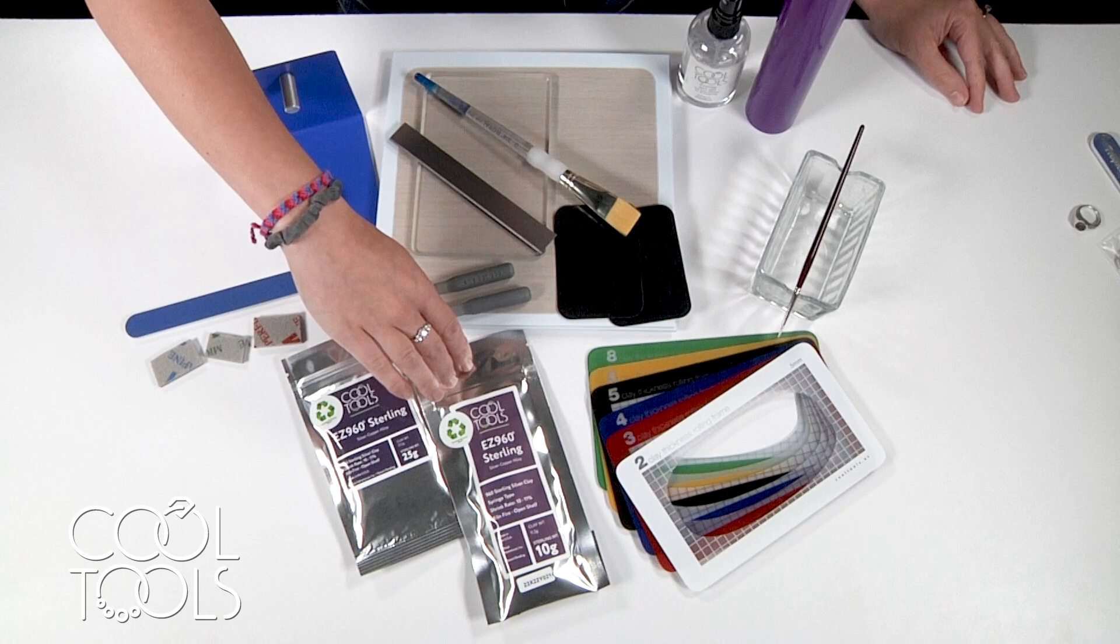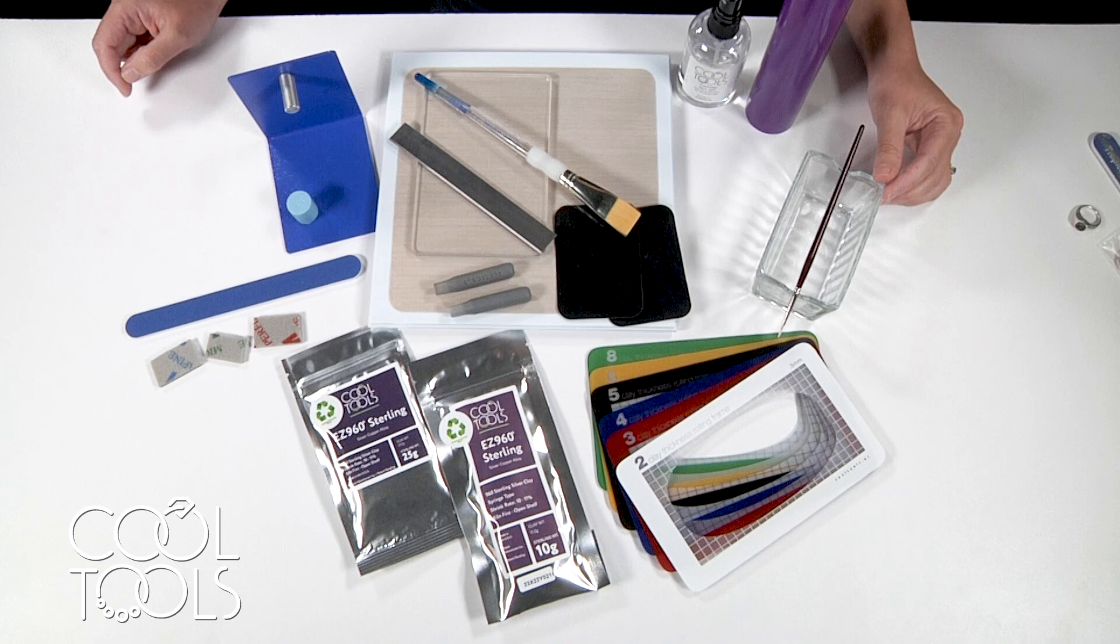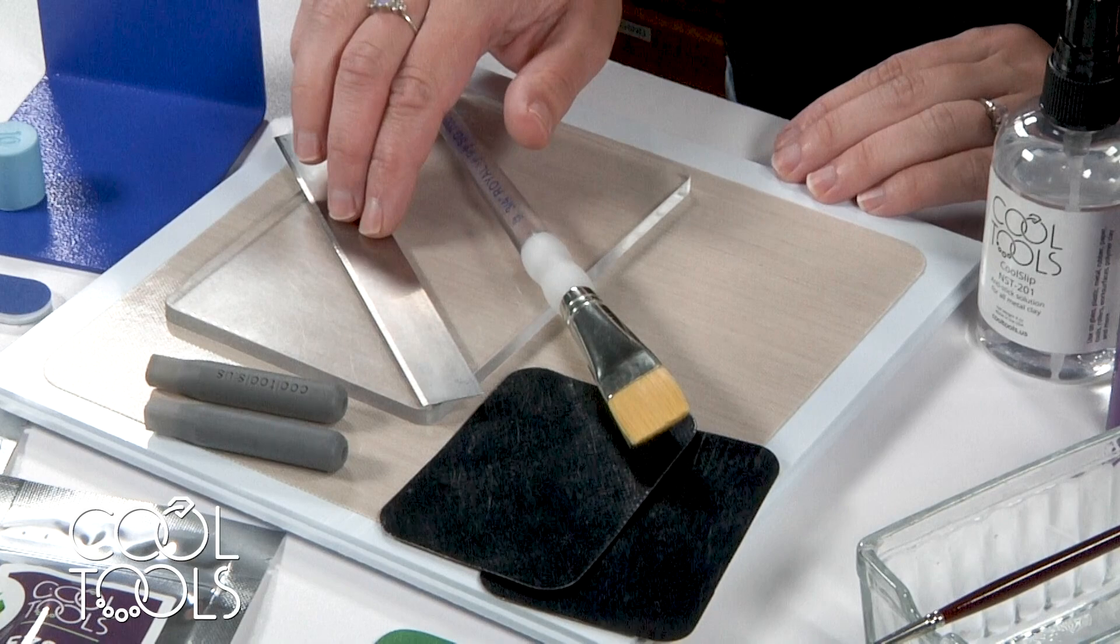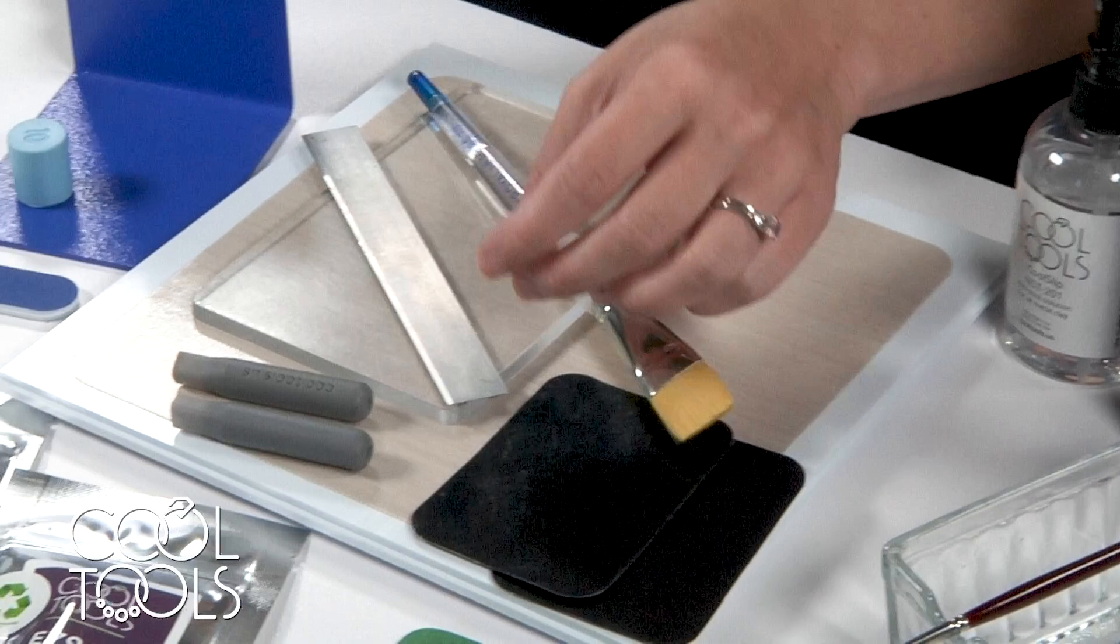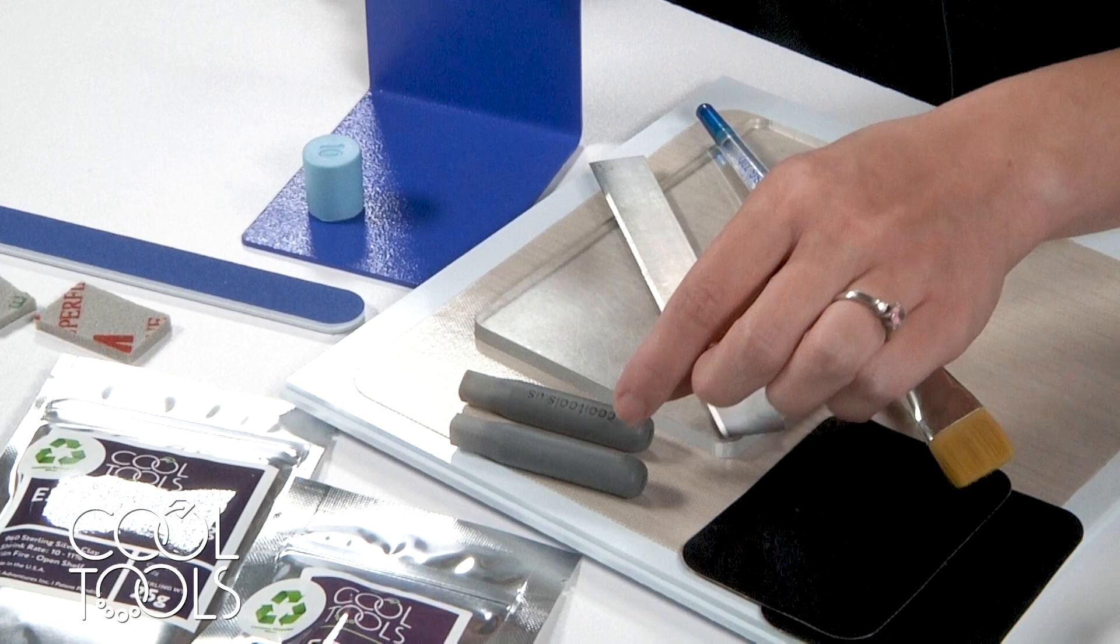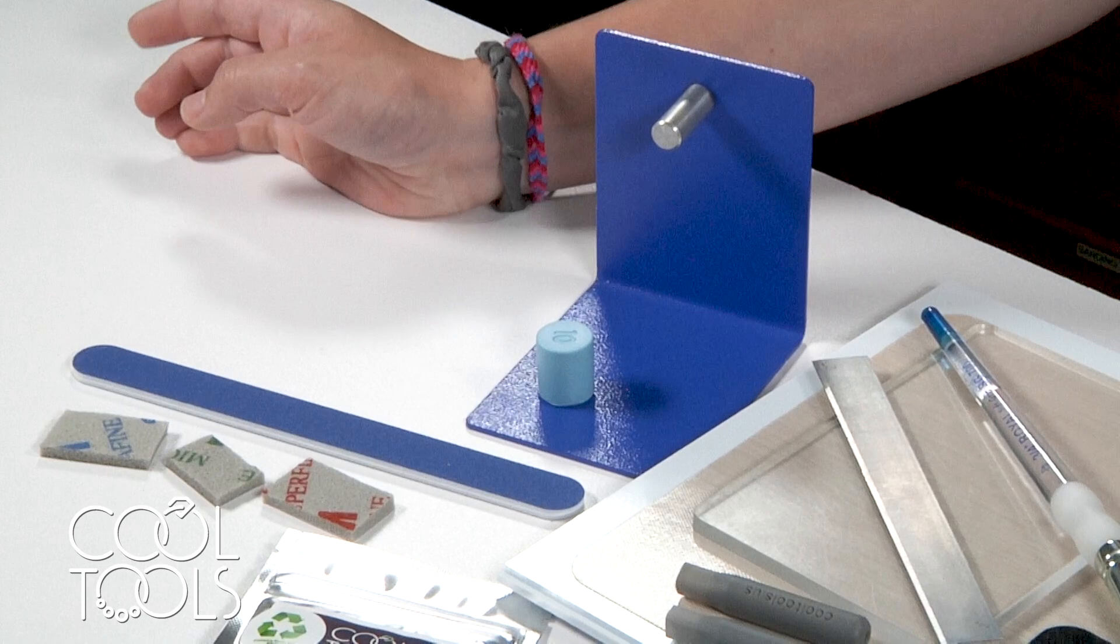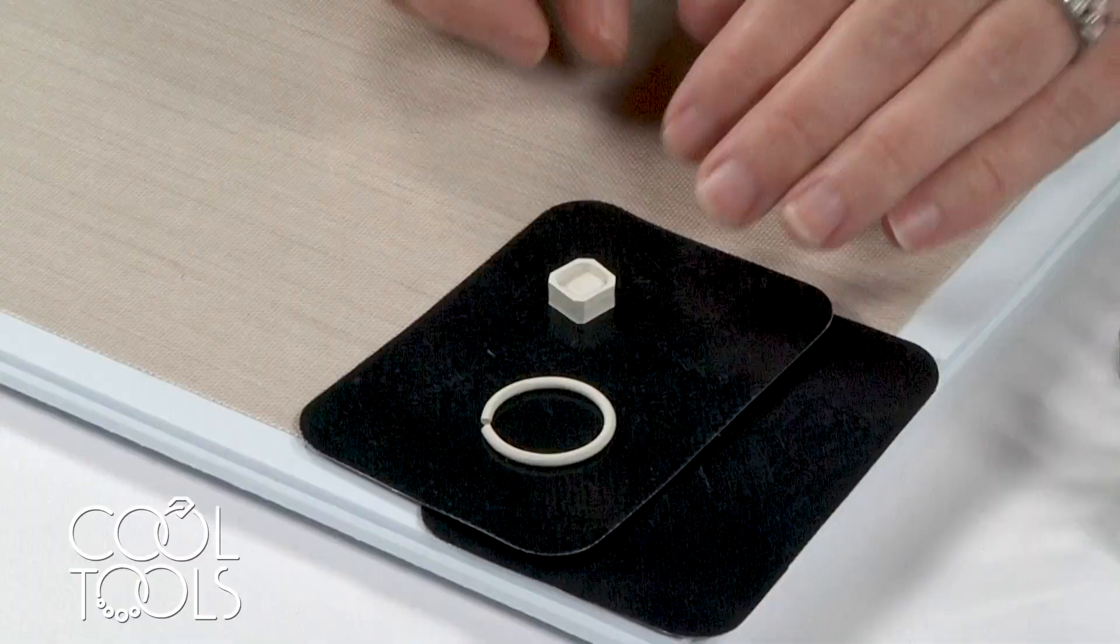In addition to EZ960 lump, you're going to need some EZ960 syringe, clay thickness rolling frames, a dish and brush for water, a wonder roller, some cool slip, a clay board, a snake maker, a brush for dusting, and a tissue blade. You're also going to need some tough cards and then a stone setting punch of your choice. Today I'm going to be working with the eight millimeter cushion, but Cool Tool sells lots of different shapes and sizes. I'm also using a mandrel stand, silicone ring mandrel, sanding stick, and sanding pads.